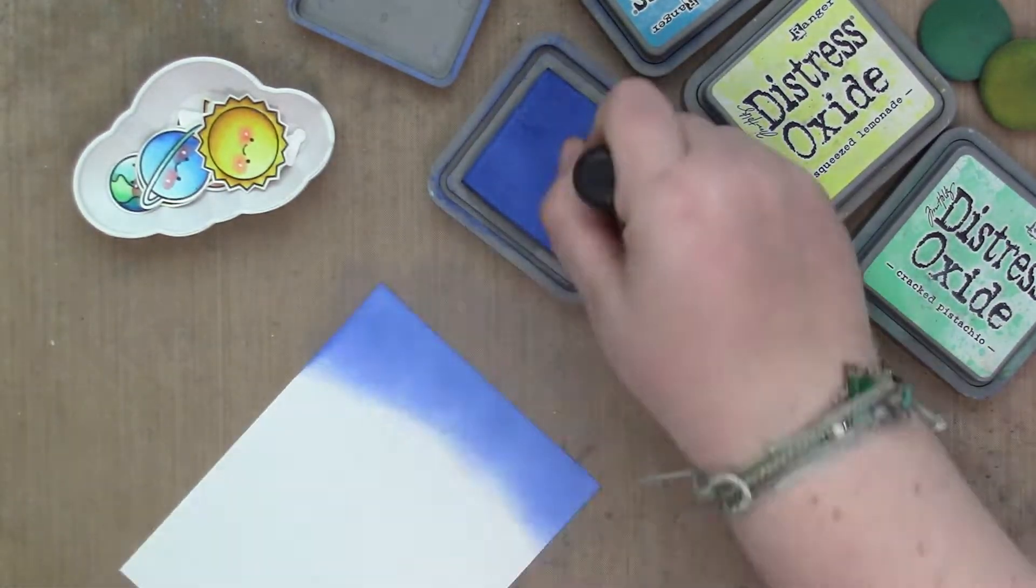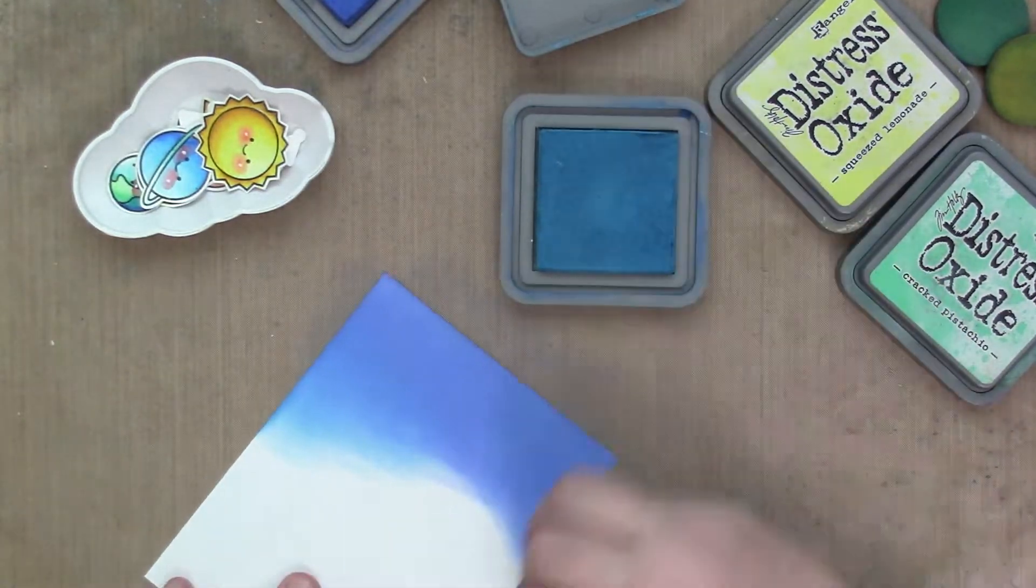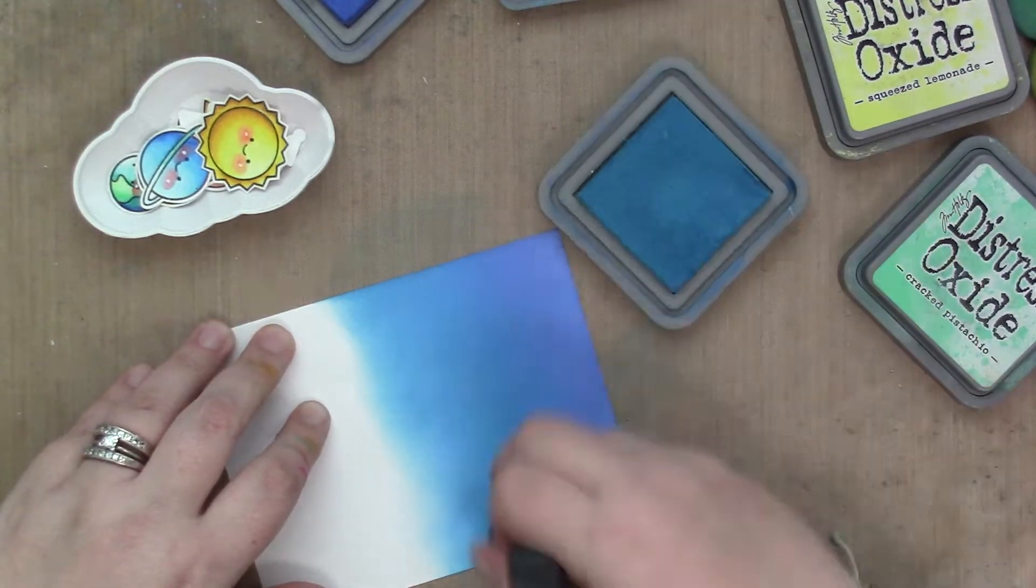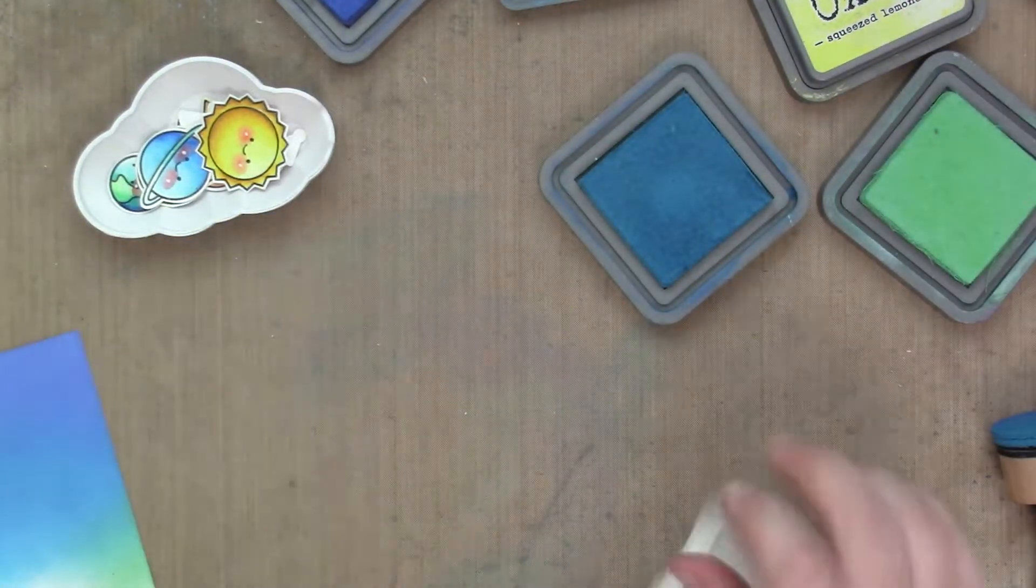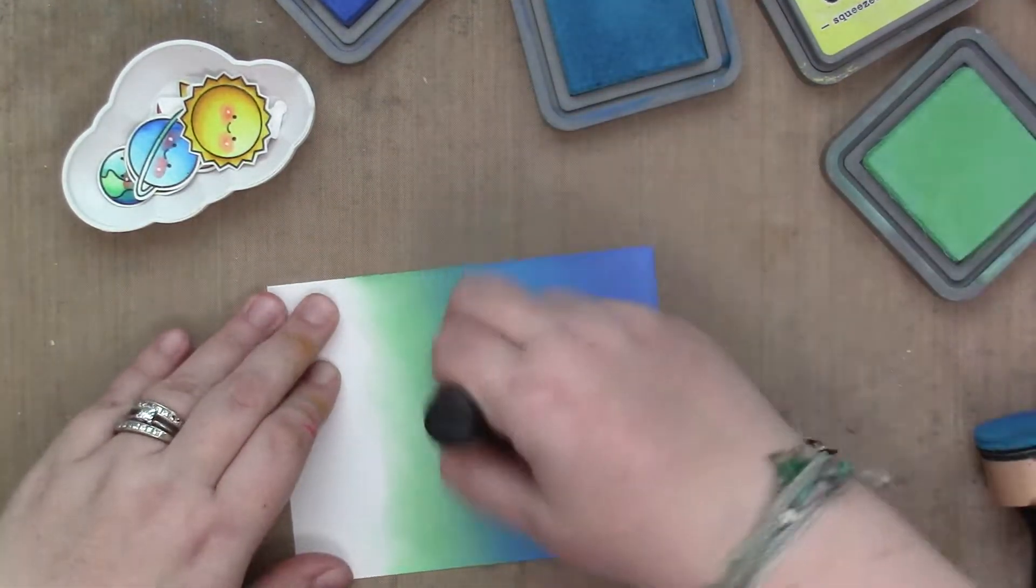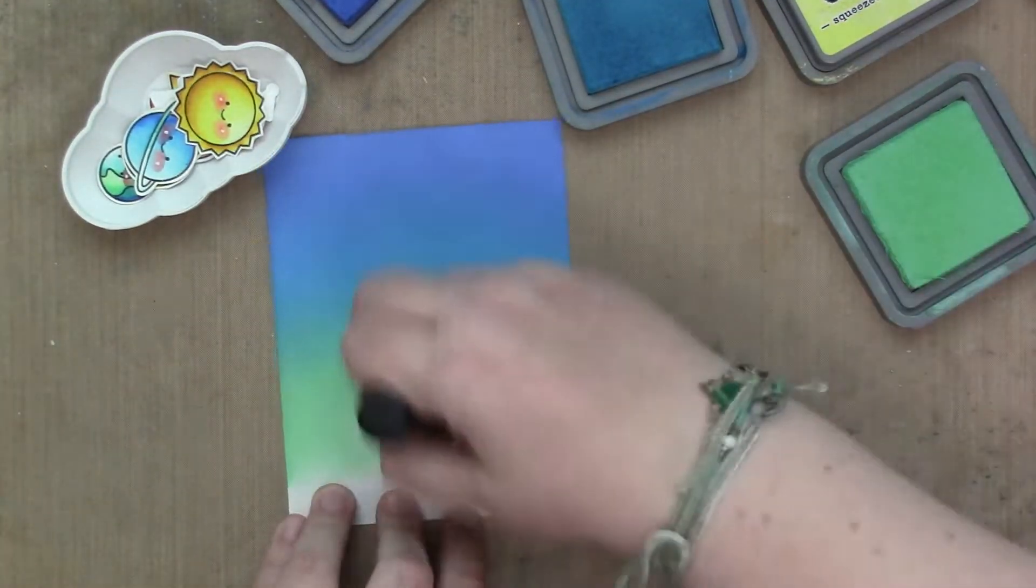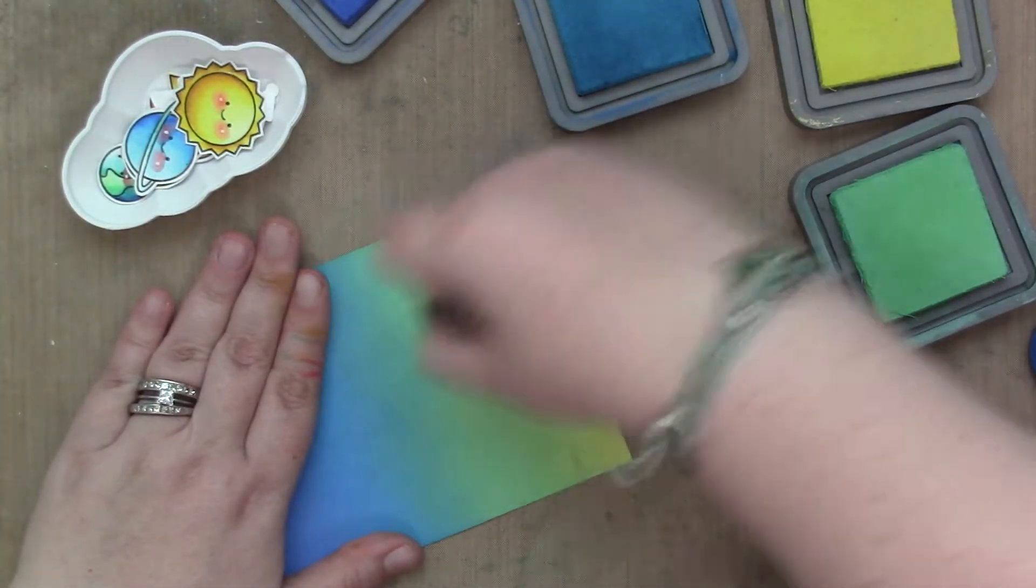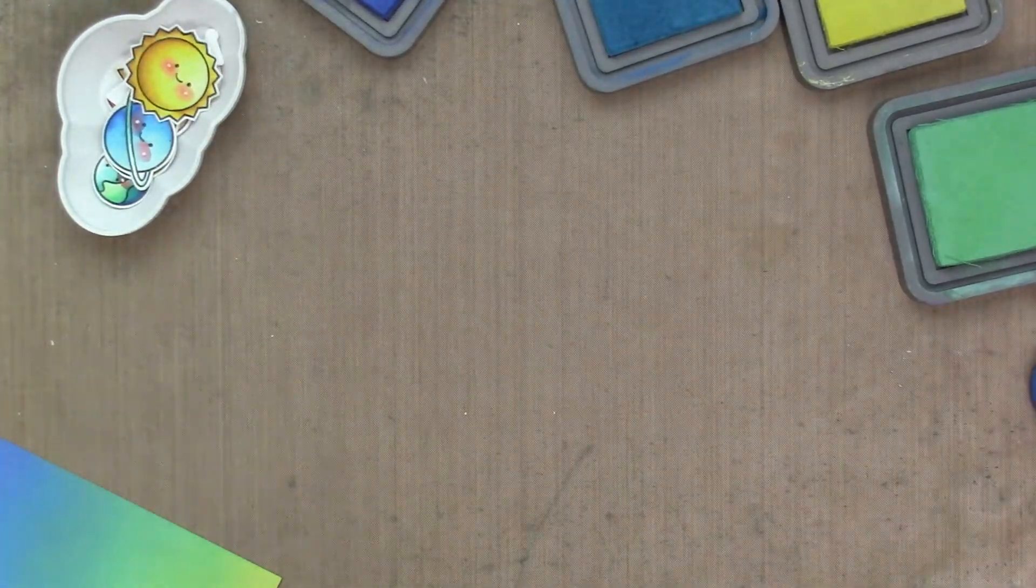And now I am moving on to the background. I am using lots of Distress Oxide. I'm going to do lots of ink blending. I am using Blueprint Sketch, Mermaid Lagoon, Cracked Pistachio, and Squeezed Lemonade for the background. I thought it would be fun to make a different kind of spin on the galaxy instead of doing it mostly black with some pops of color for the stars. I thought, why don't I make it a really kind of cool background with pops of black?